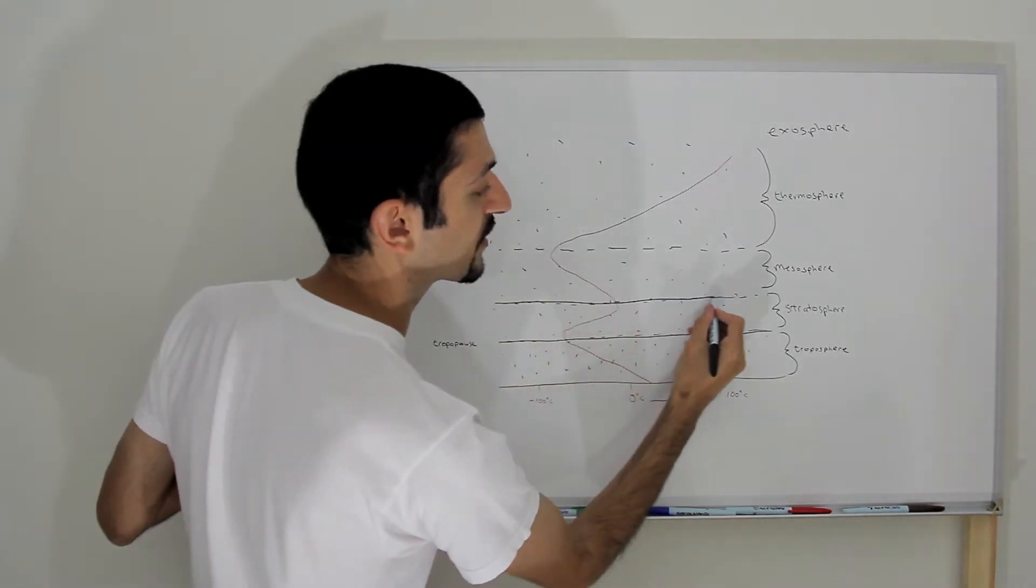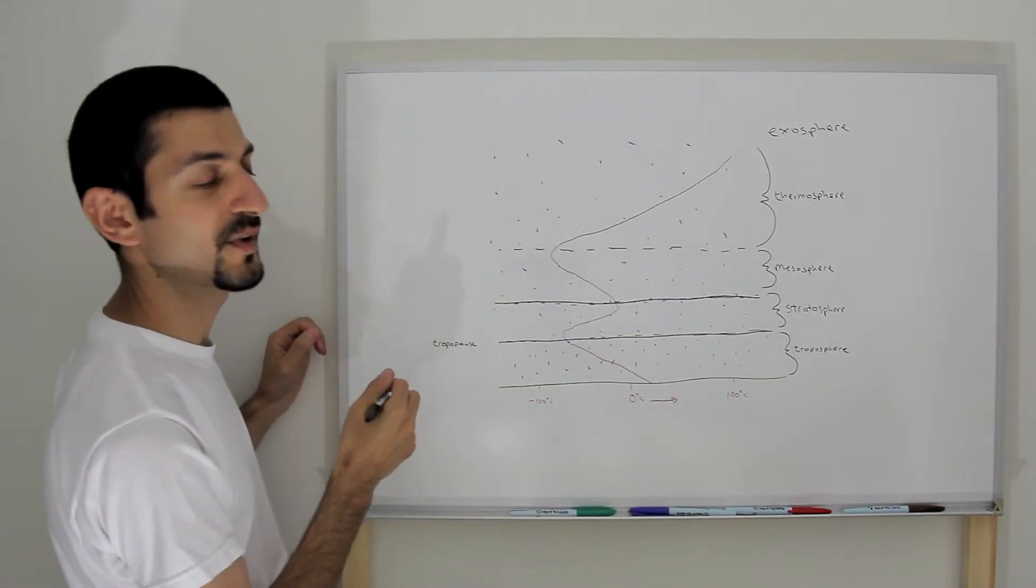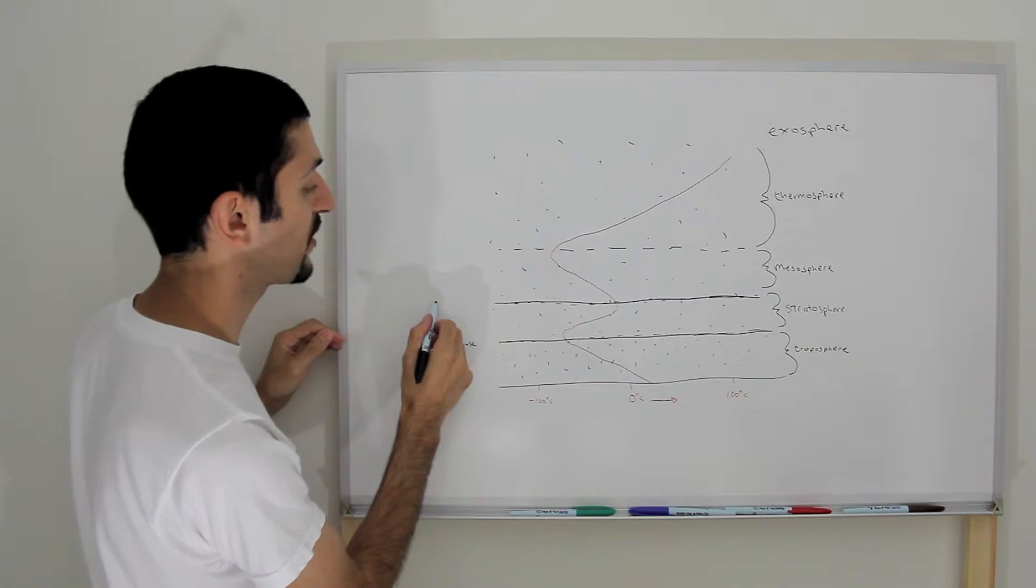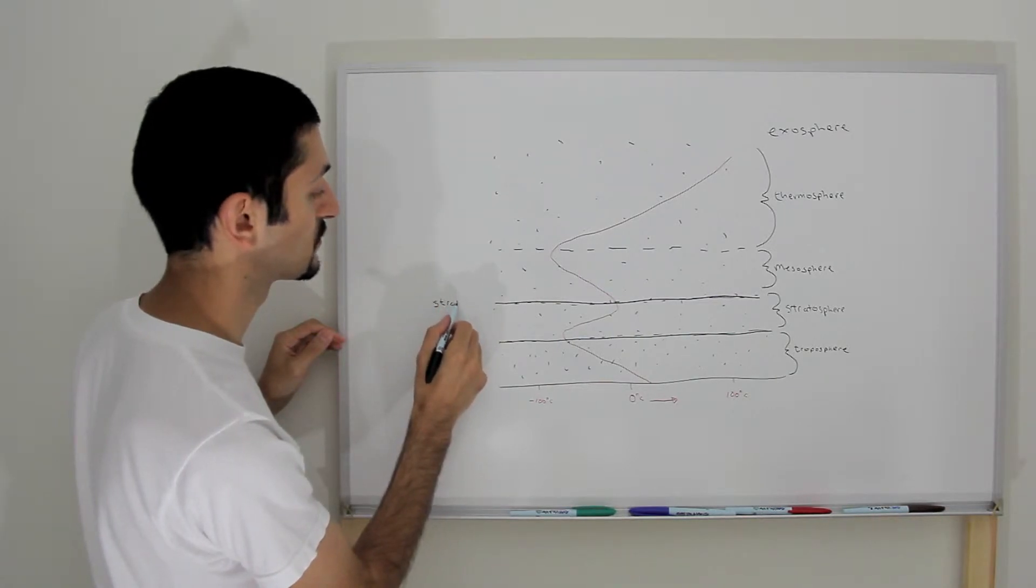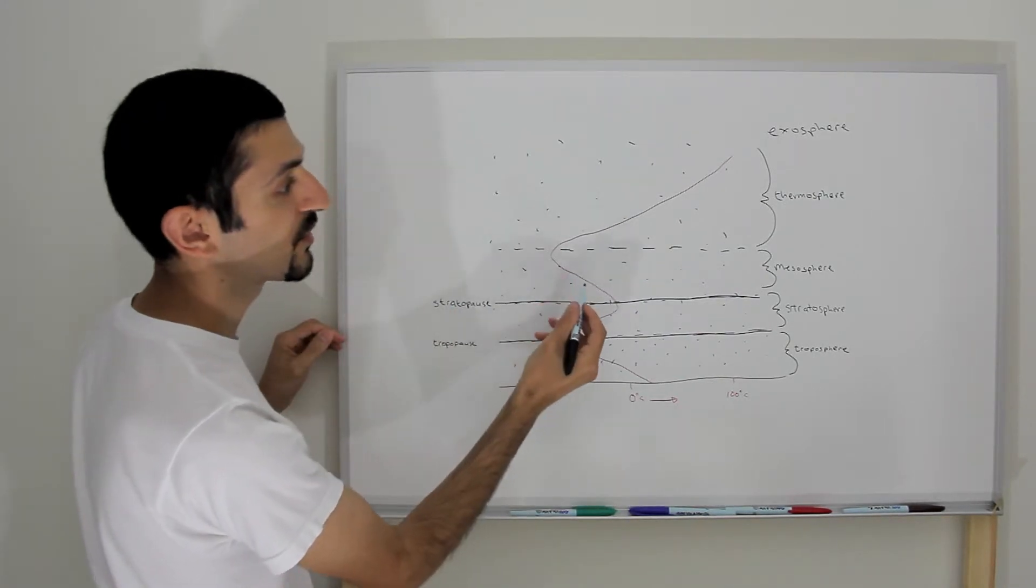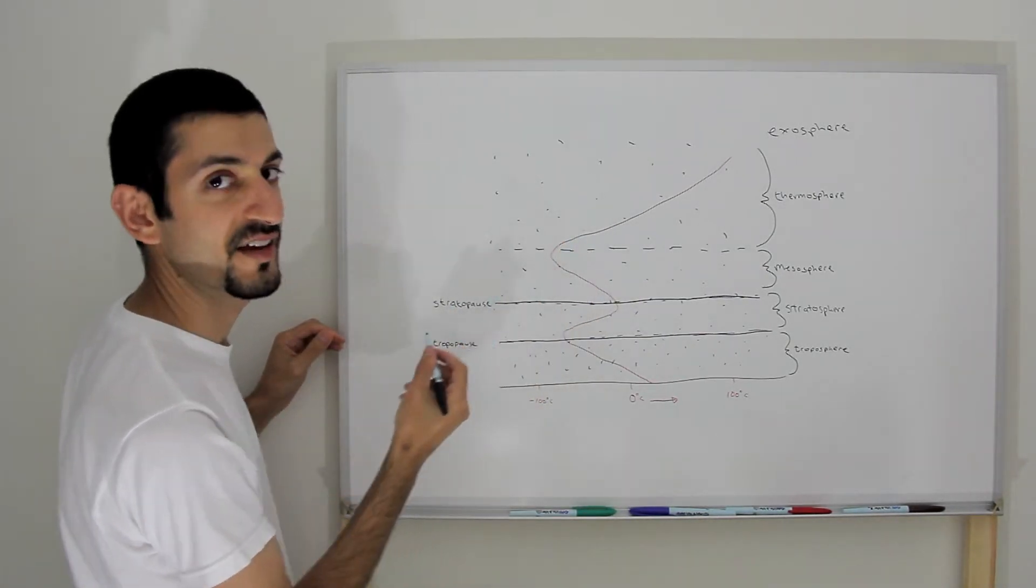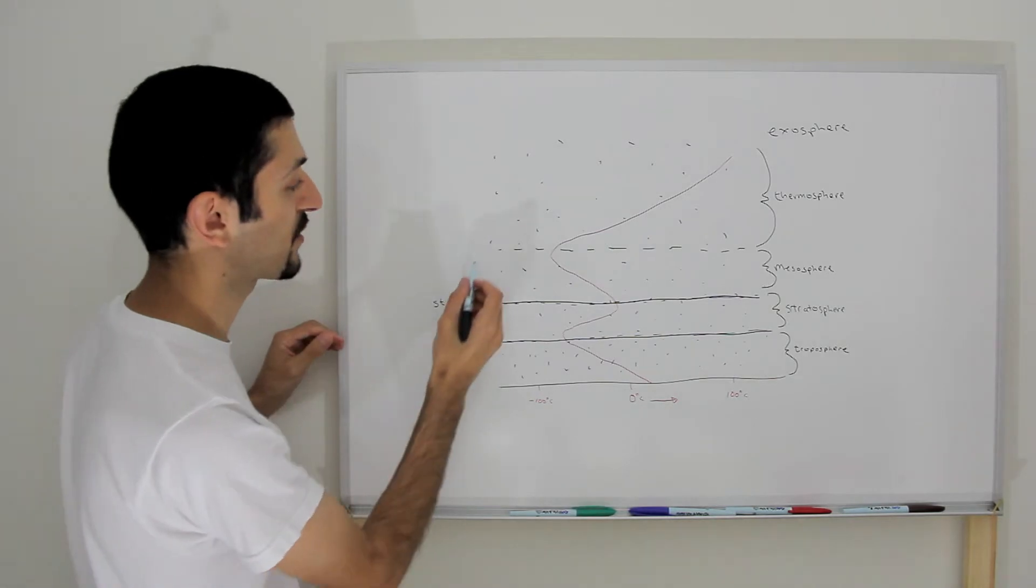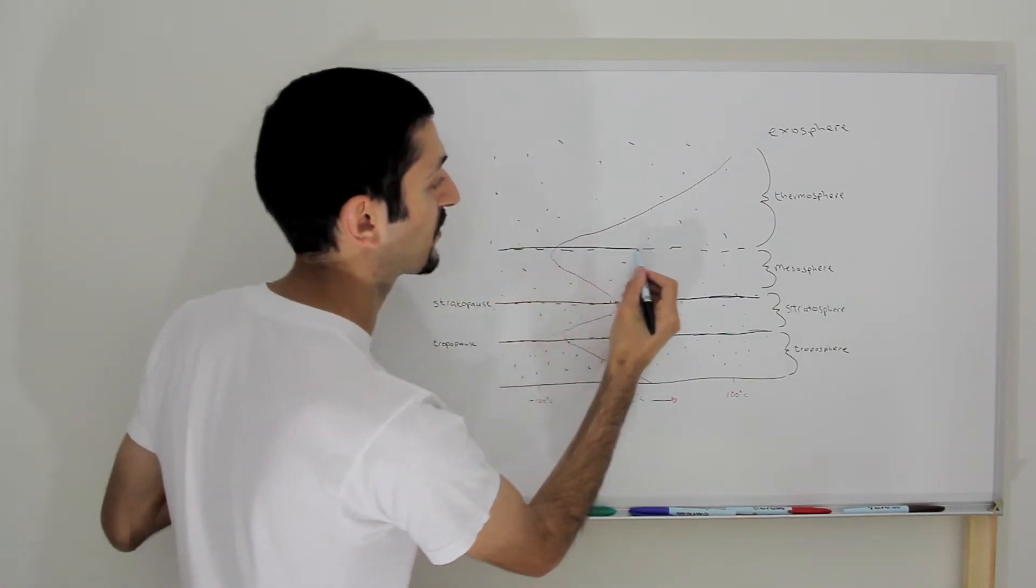And this layer here, between the stratosphere and the mesosphere, is the stratopause. And then between the mesosphere and the thermosphere, can you guess what it is? Correct, the mesopause.